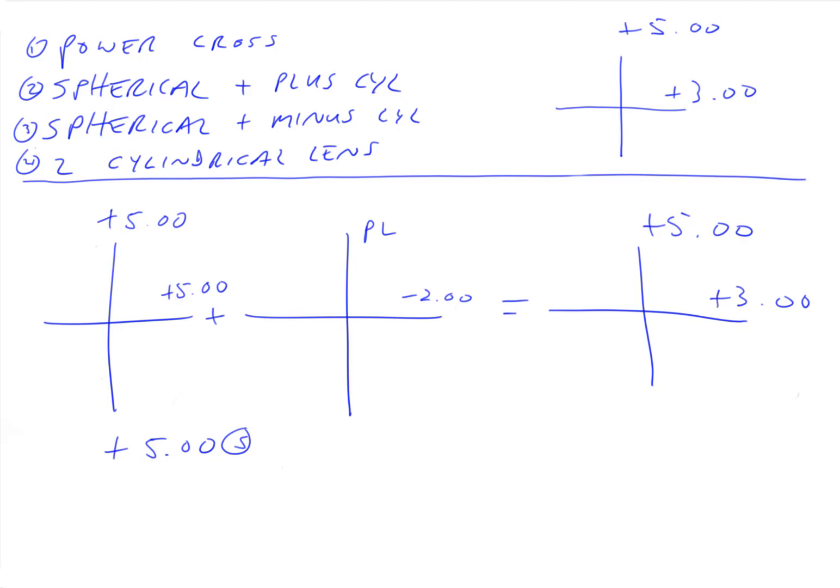So what is this lens? Well, the power we know is minus two. And the axis, the plano lies along the 90 degree meridian. So it's axis 90. So the way we write this is plus five minus two axis 90. So it's plus five and minus two axis 90. It's not plus five minus two axis 90. It's certainly not plus five minus two at 90. It's plus five minus two axis 90.